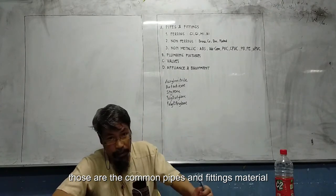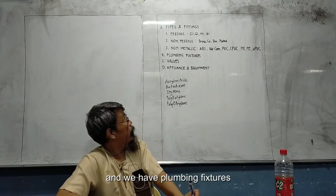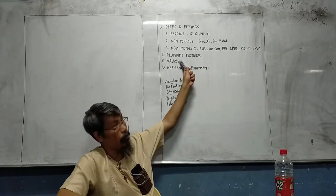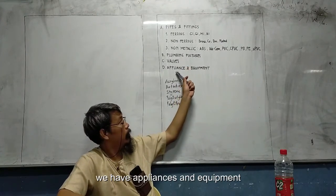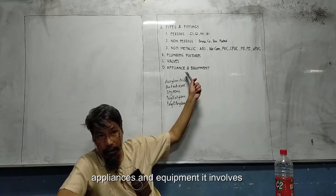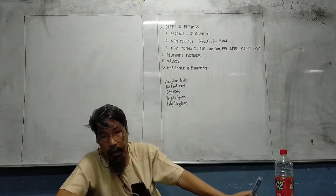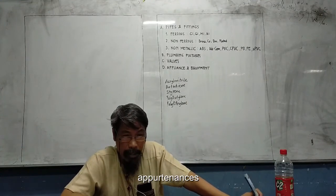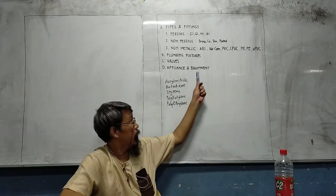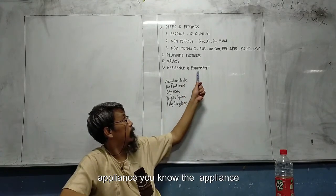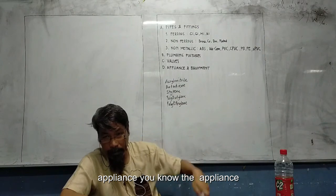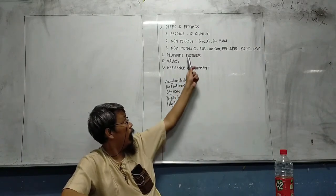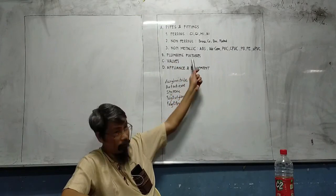We also have fittings and heating materials, and plumbing fixtures and equipment. These involve appliances — if there is a fixture, there is an appliance. Let us now go back to the pictures. There should be diagrams. Thank you.